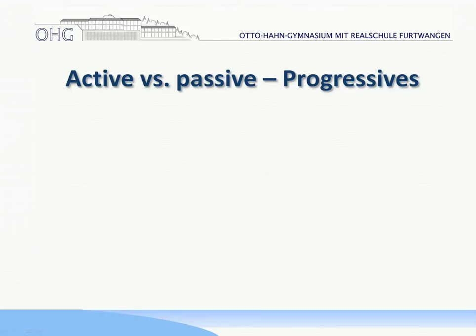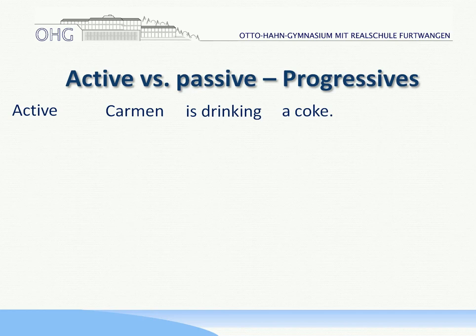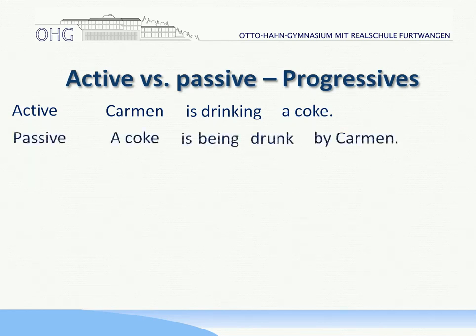In this advanced video we will have a look at the progressives and the personal passive. We'll start with the progressives. So active sentence: Carmen is drinking a coke — present progressive. In the passive it would look like this: a coke is being drunk by Carmen.